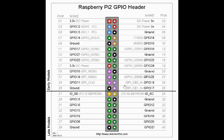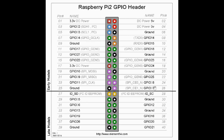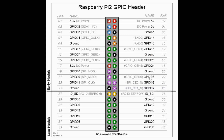Pin number five of the LCD goes to ground, which is pin number 30 on the Raspberry Pi. Then pin number six of the LCD we're going to connect to GPIO8, which is the enable pin.